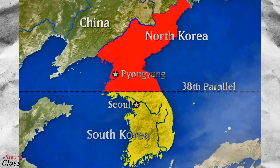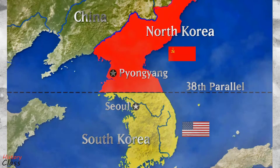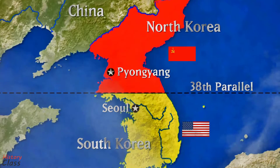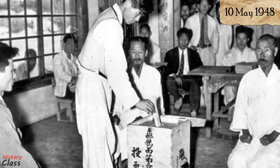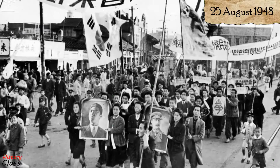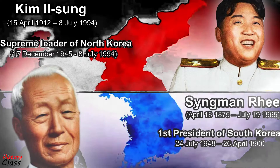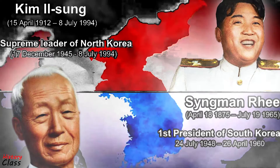The USSR occupied the North and the USA occupied the South. This was, at first, meant to be for a short time. At the Moscow Conference of the Council of Foreign Ministers in December 1945, the United States and USSR agreed on Korea having a provisional government. A general election was held in South Korea on 10 May 1948, and North Korea held parliamentary elections three months later, on 25 August. The resultant South Korean government promulgated a national political constitution on 17 July 1948 and elected Syngman Rhee as president on 20 July 1948.